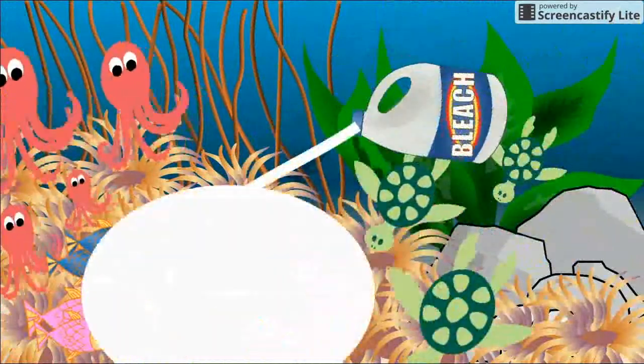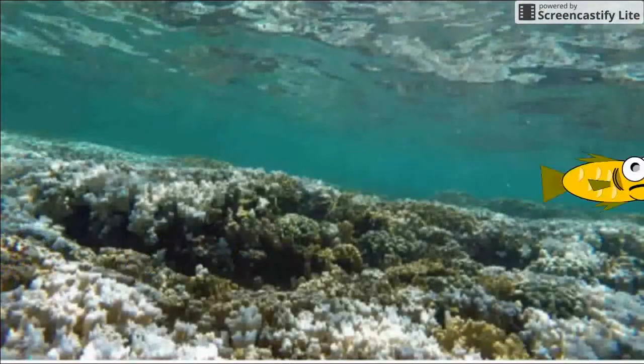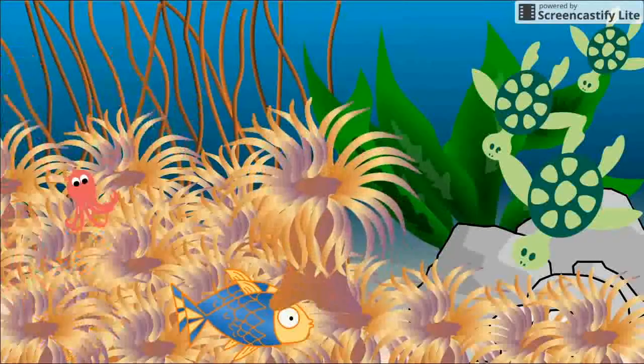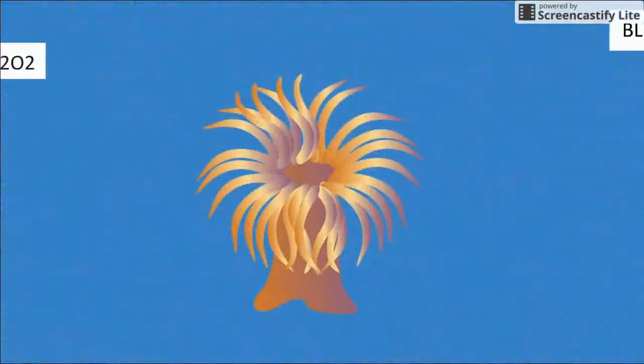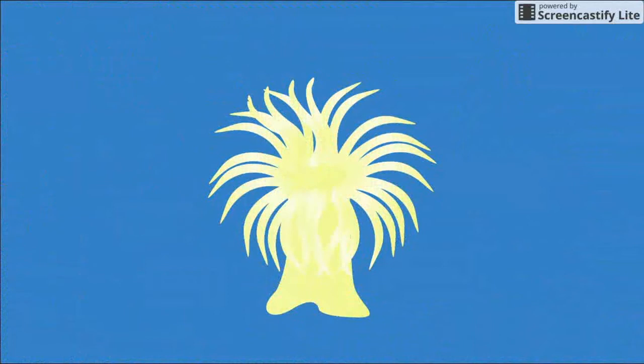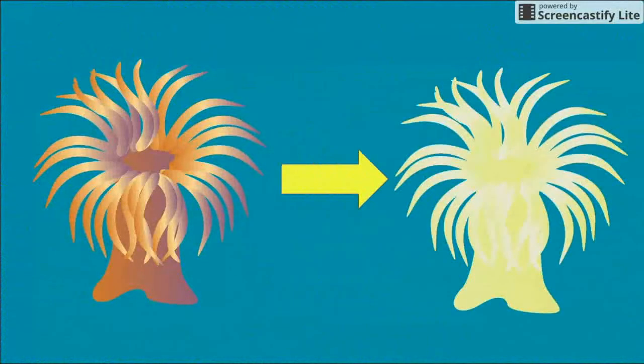Coral uses algae in its tissue for sugars and nutrients. When algae's environment reaches 30 degrees, it becomes overreactive and loses its ability to convert solar energy. The energy needs to go somewhere, so it creates reactive forms of oxygen like peroxide and bleach inside the coral's tissue. This bleaches the coral as a result.